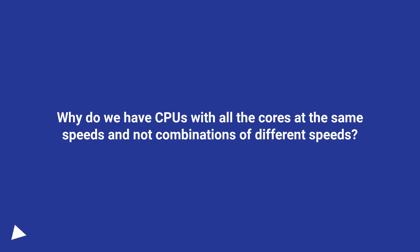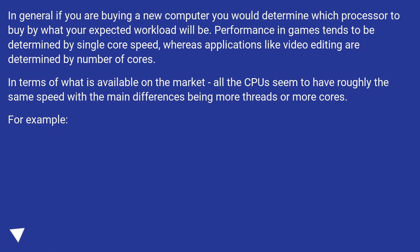Why do we have CPUs with all the cores at the same speeds and not combinations of different speeds? In general, if you are buying a new computer you would determine which processor to buy by what your expected workload will be. Performance in games tends to be determined by single core speed, whereas applications like video editing are determined by number of cores. In terms of what is available on the market, all the cores seem to have roughly the same speed with the main differences being more threads or more cores.